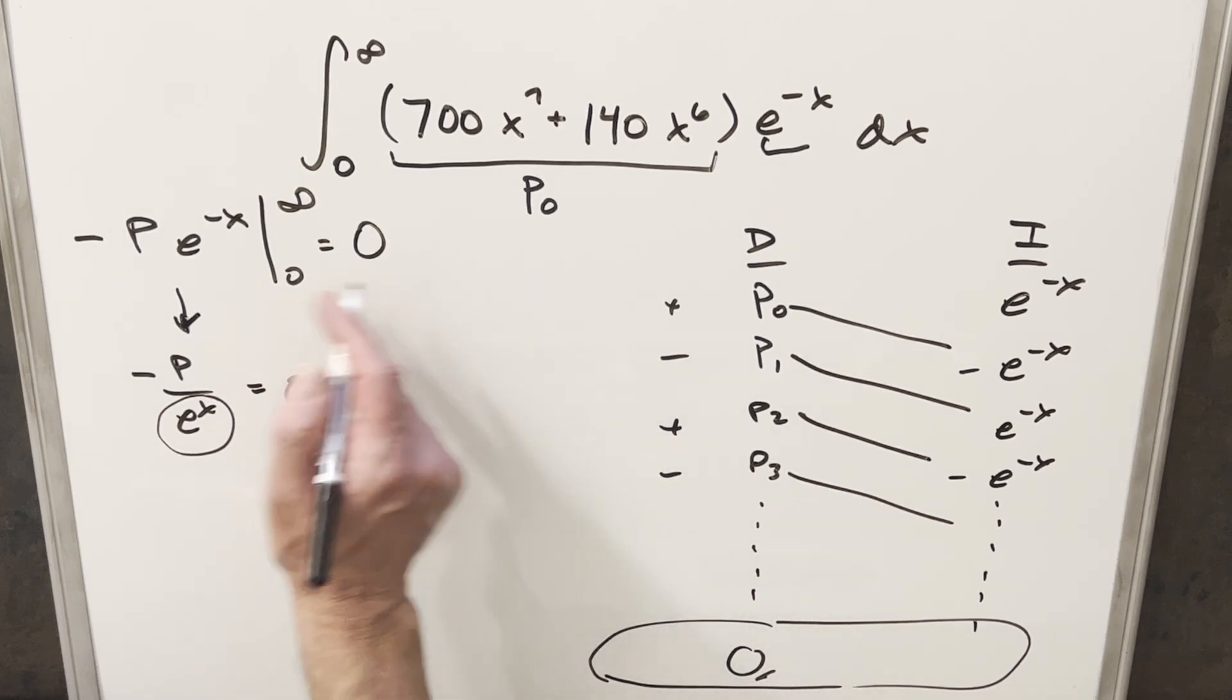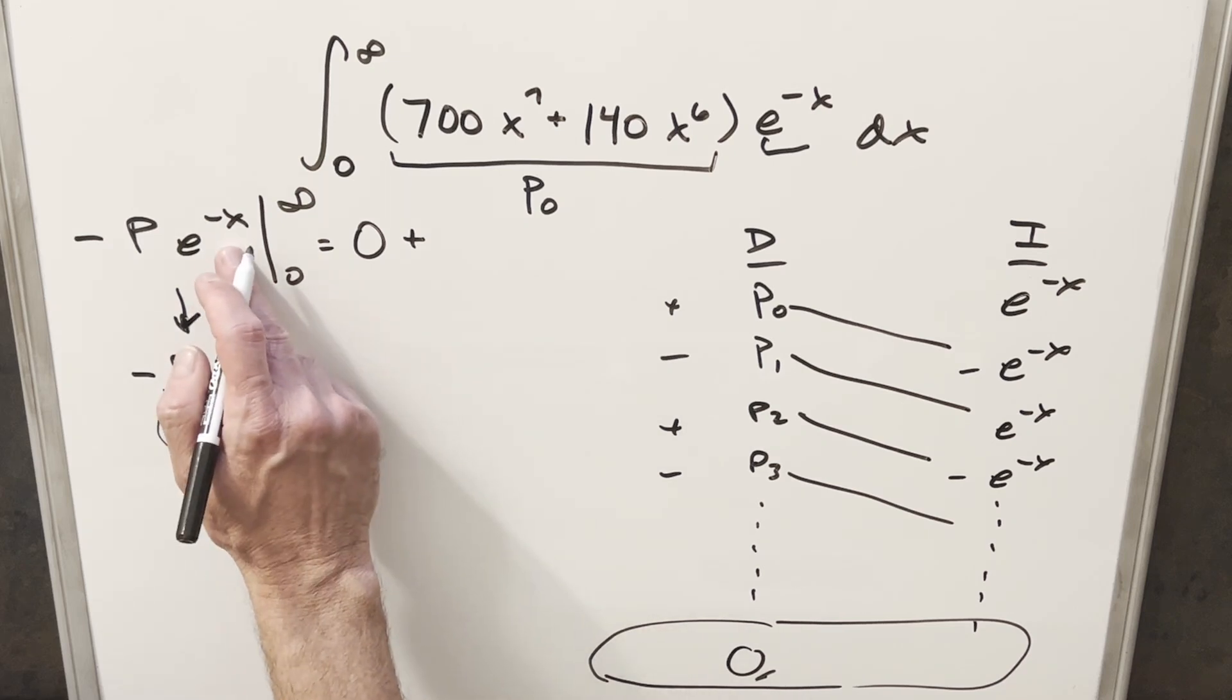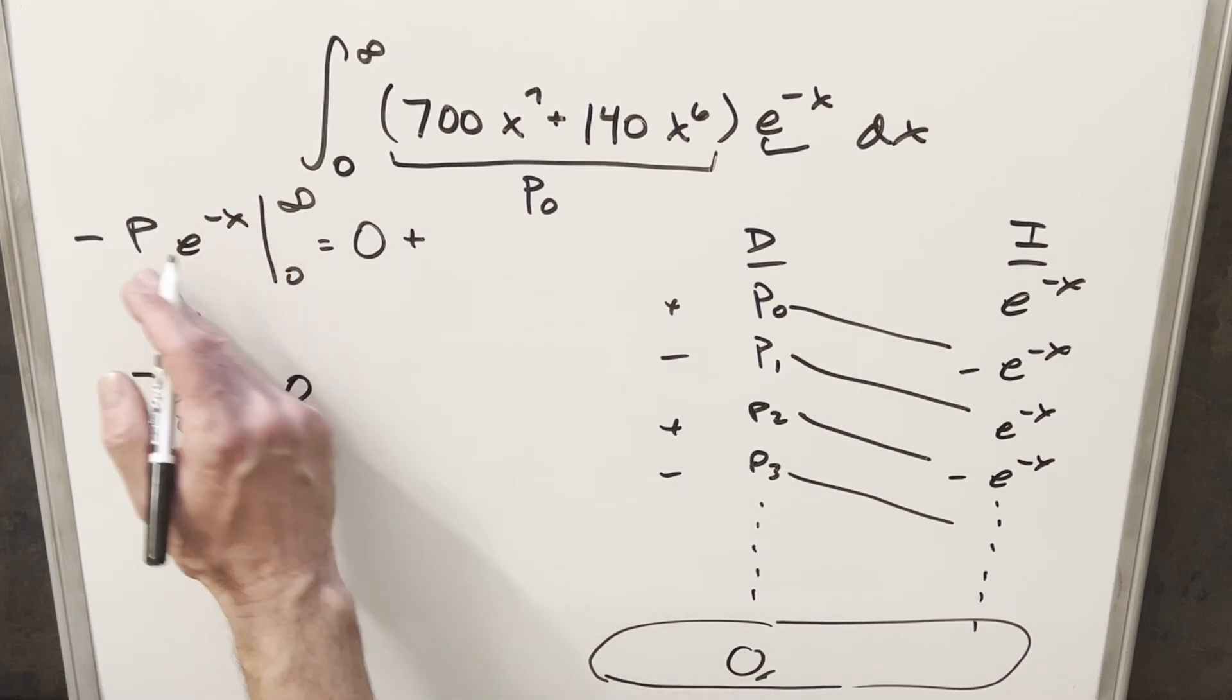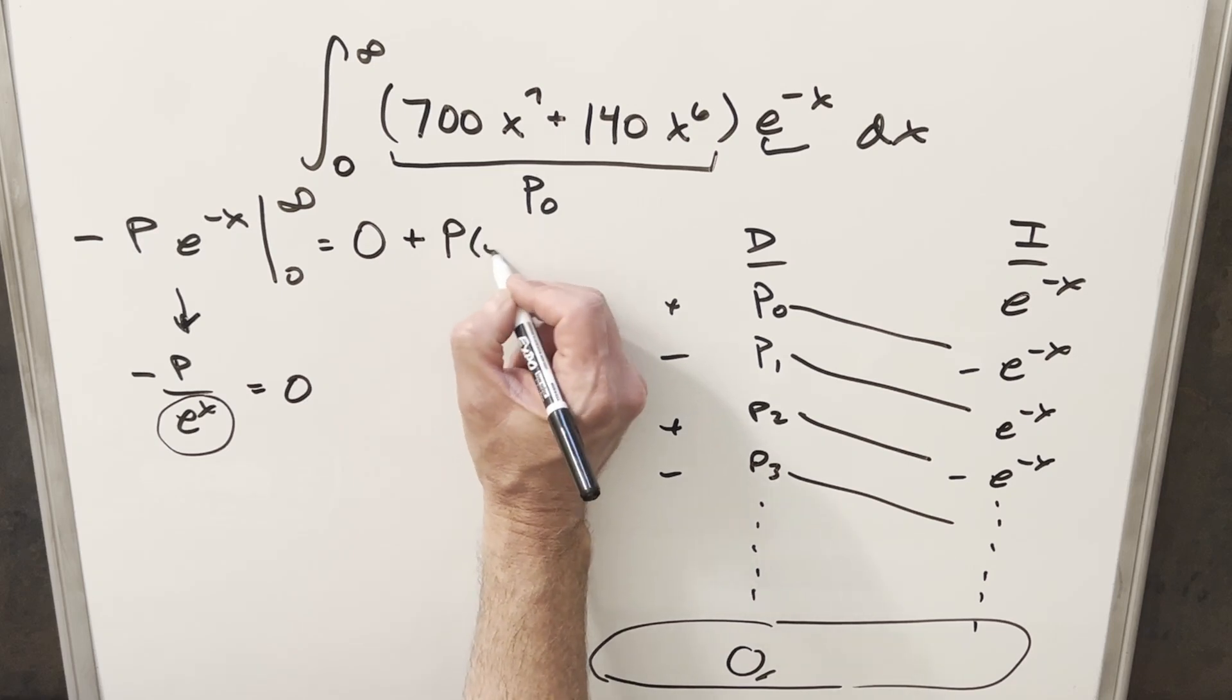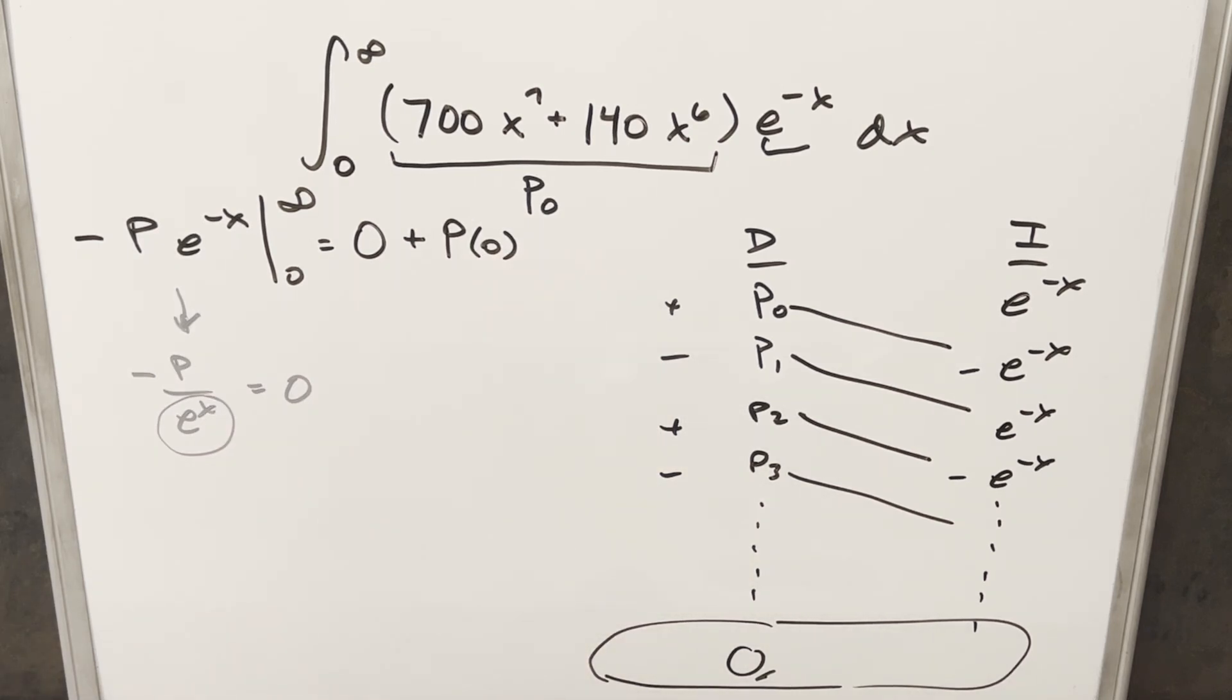Then minus times minus is going to give me a plus here. We plug 0 in for e^(-x). E to the 0 is just 1. So what we end up with is just a polynomial of some kind that we need to evaluate at 0. And now because, like I said, this works the same way for every single one of these diagonals,